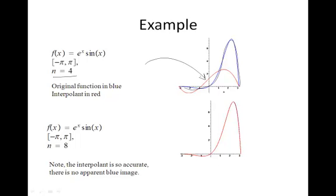And for n equals four, the interpolant is not very good at all. But all we have to do is jump up to n equals eight. And the interpolant is so accurate that the only place you can see the difference between the red and the blue is right in this range here. So the approximation is very, very, very good.